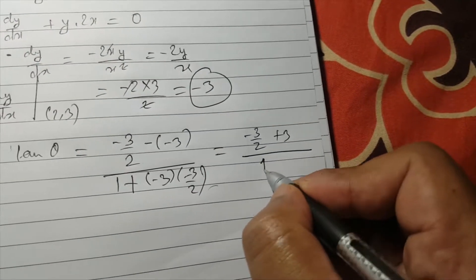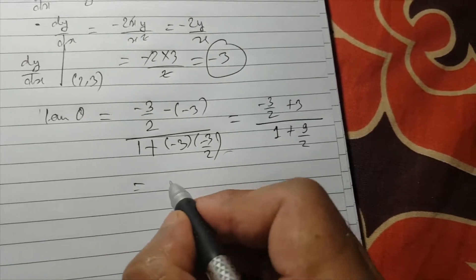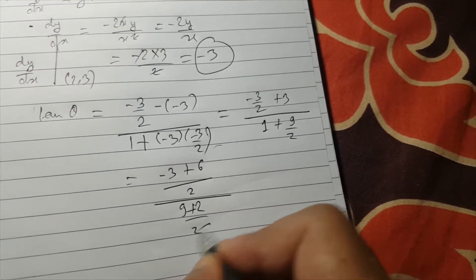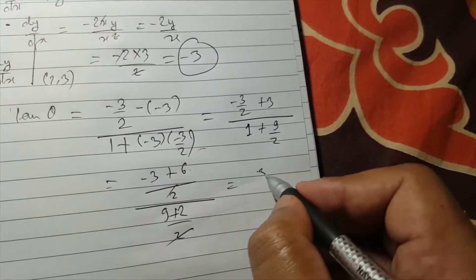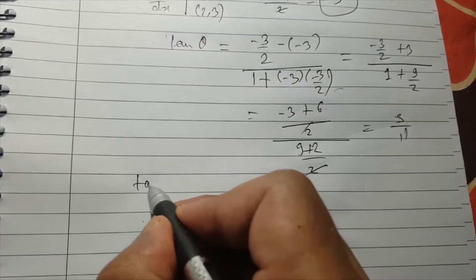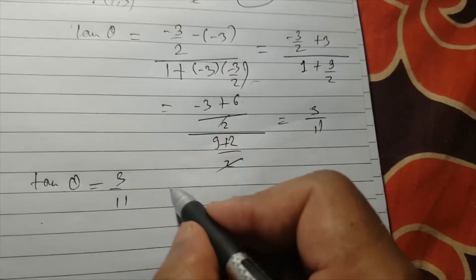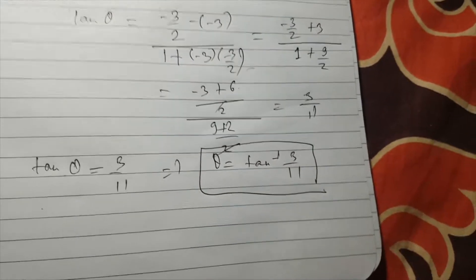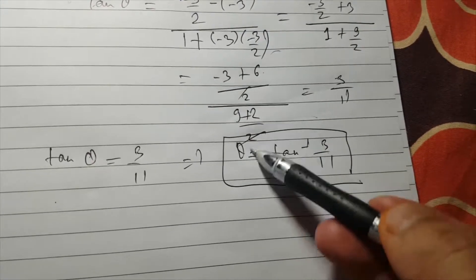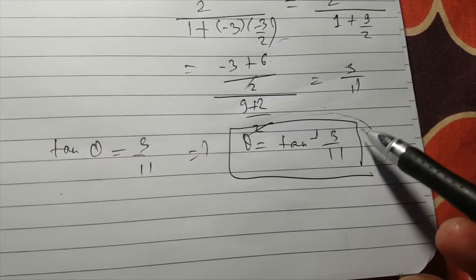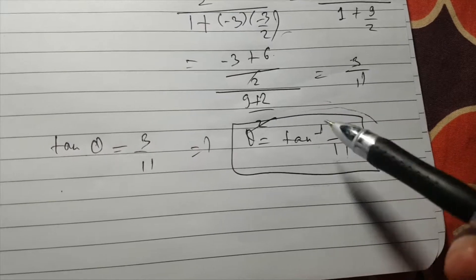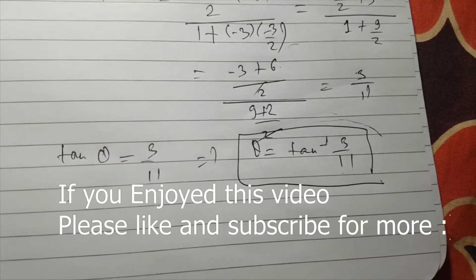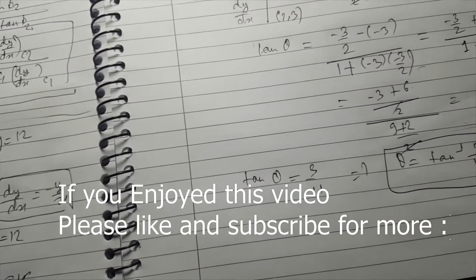Simplifying: the numerator is -3/2 + 3 = 3/2, and the denominator is 1 + 9/2 = 11/2. So tan(theta) = (3/2) / (11/2) = 3/11. Therefore theta equals tan⁻¹(3/11). You can use your scientific calculator to find this value in degrees or radians, or you can leave it in this form and your marks will not be deducted.